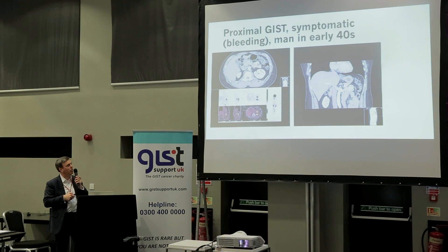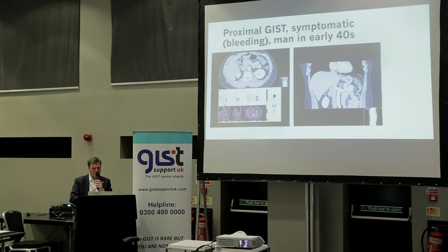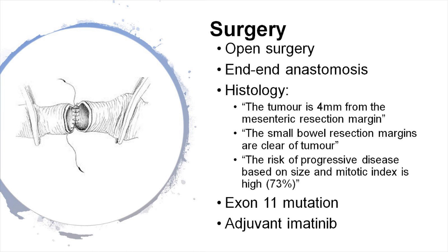Sometimes they're in the proximal bowel, which can be quite difficult. This is a young man who presented with bleeding. This is a PET scan, showing increased metabolic activity corresponding to the tumour — one way of identifying the tumour, and when you give imatinib the metabolic activity shuts down, so it's a good way of monitoring response. This was quite a difficult tumour to take out — definitely not one I was going to do laparoscopically. I did an end-to-end anastomosis, the margins were clear, and that patient is now on imatinib and doing very well.